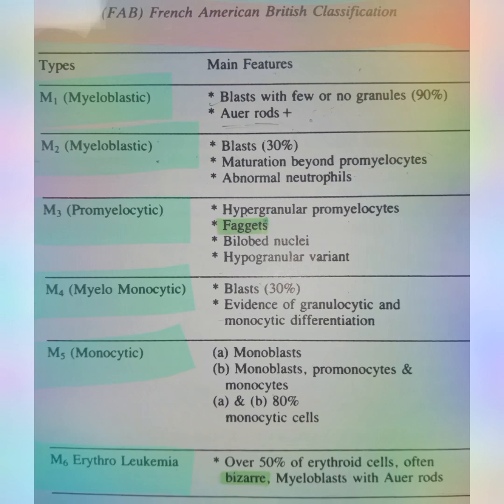Type 3 is promyelocytic. In this you will see hypergranular promyelocytes, meaning you will see a higher amount of granules than normal. You will also see Auer rods (faggots) and bi-lobed nuclei. There is both a hypergranular variant and a hypogranular variant - meaning it may have a very high amount of granules or a very low amount. So Type 3 is only based on the granules.